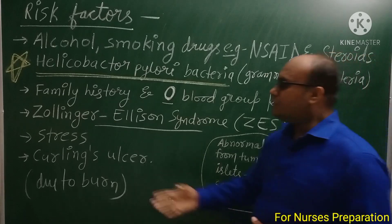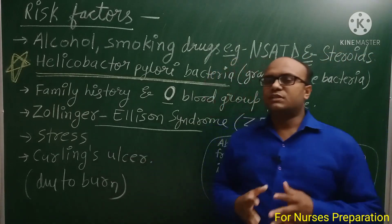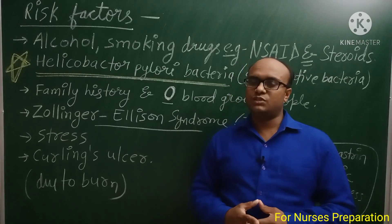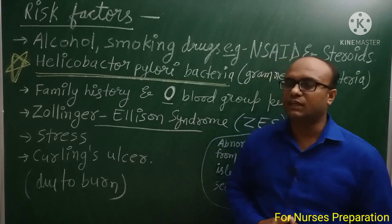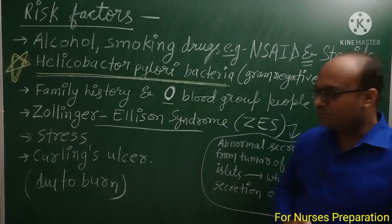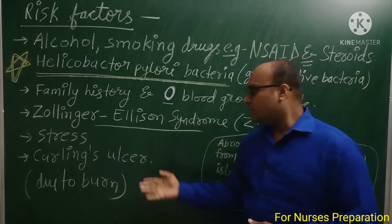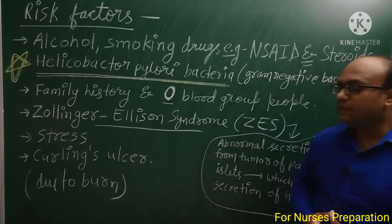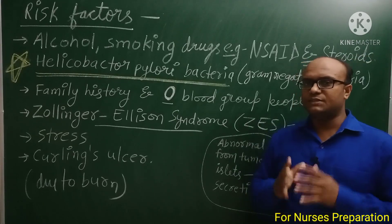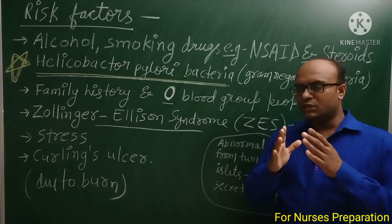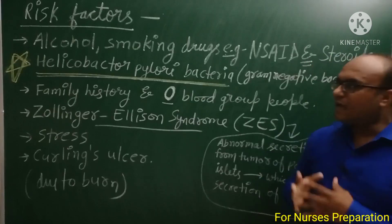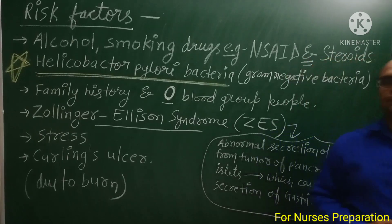Next आता है Stress। जो person लंबे समय तक severe stress वाली situations को face करते हैं, उनमें भी Peptic Ulcer develop होने के chances बढ़ जाते हैं। Last आता है Curling Ulcer — जब किसी person के अंदर severe burn हो जाए, तो उसके कारण ulcers का formation हो सकता है।